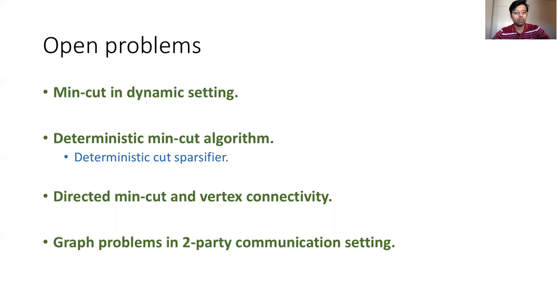And fourth, graph problems in the two-party communication setting. Can Alice and Bob use order n bits of communication for computing the minimum directed cut or vertex connectivity? We haven't mentioned this, but the problem of weighted min cut can be solved by order n bits of communication between Alice and Bob. In fact, this question is also open and interesting for other graph problems such as maximum bipartite matching.